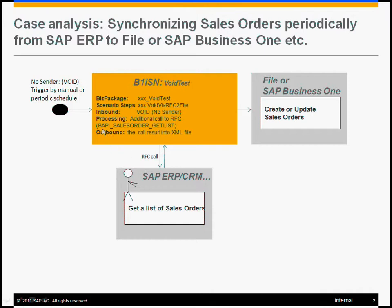In addition, we would like to learn how to create an additional call using RFC to get a list of sales orders, maybe by customer or by document date. We can have not just an RFC call, but also additional BAPI calls or even Business One calls to Business One, with more steps during the processing. For the outbound phase, I would like to output the result into an XML file, or we can also output the sales orders into Business One.